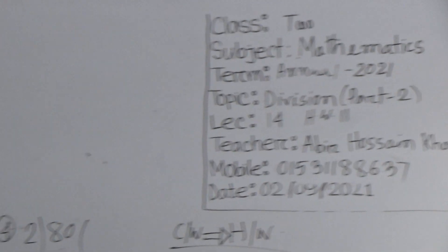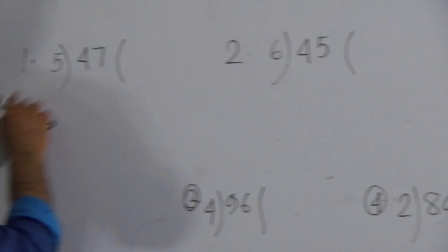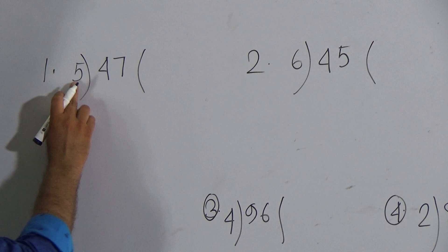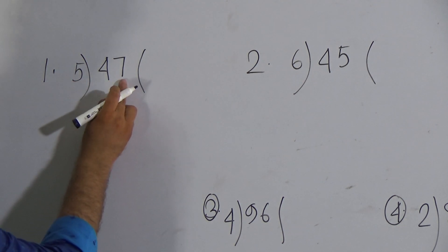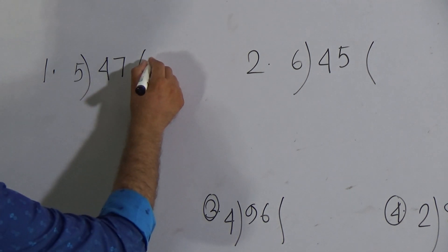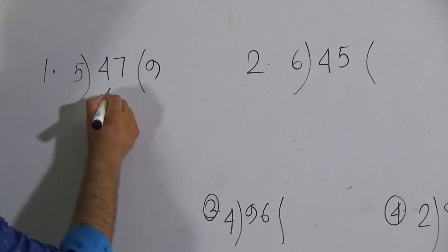Now let us start our class. Here is question number 1: 47 divided by 5. So here is 4 is smaller than 5, so we have to consider with 7. So here it will be 47 and we know that the times table of 5: 5 ones are 5, 5 twos are 10, 5 threes are 15, 5 fours are 20, 5 fives are 25, 5 sixes are 30, 5 sevens are 35, 5 eights are 40, 5 nines are 45. So here it will be 45.